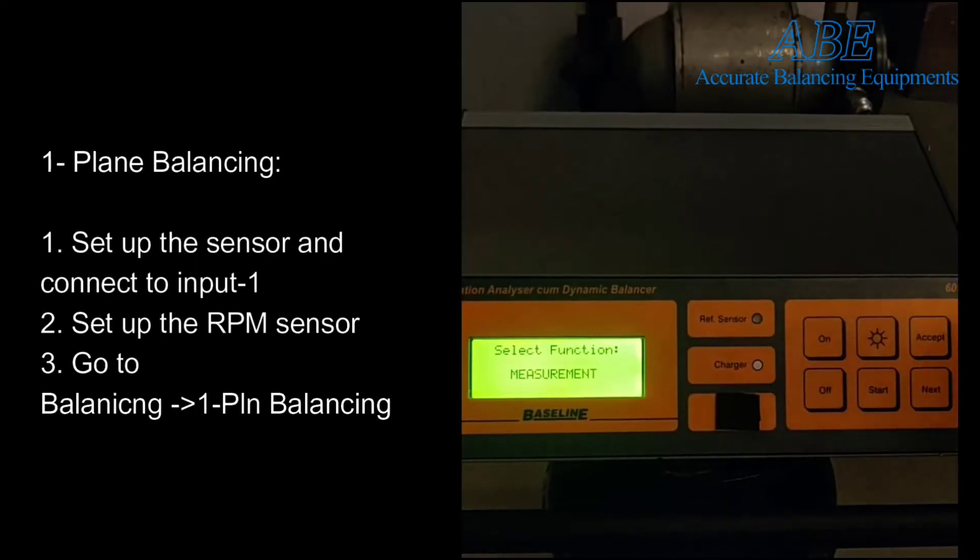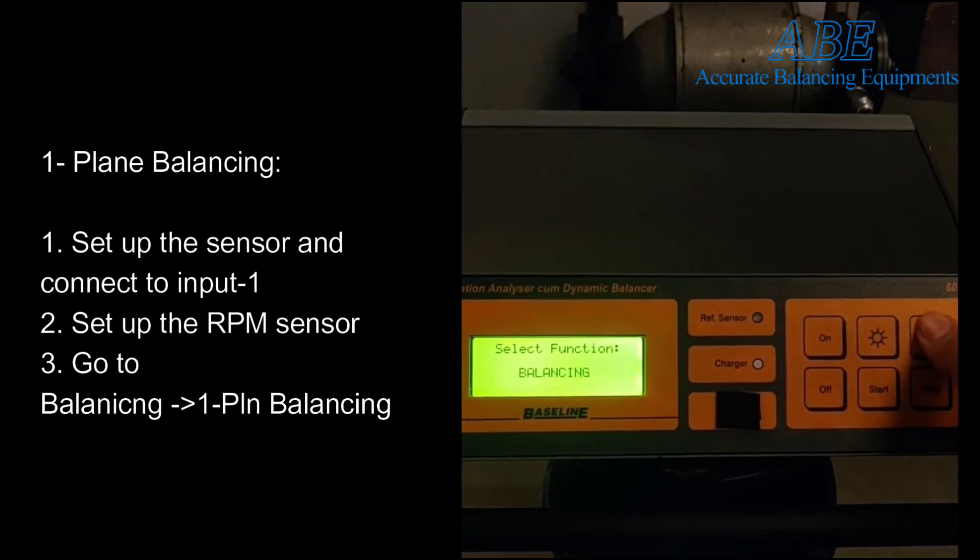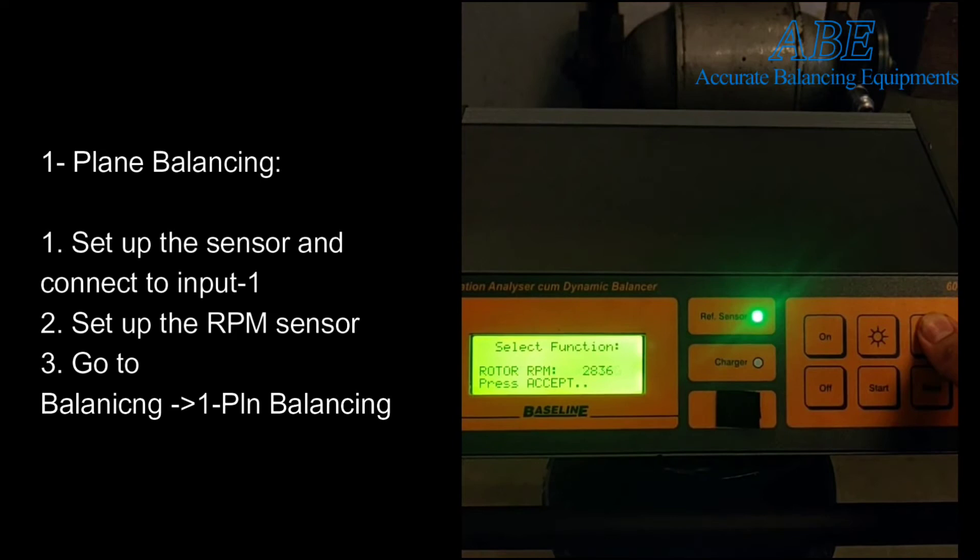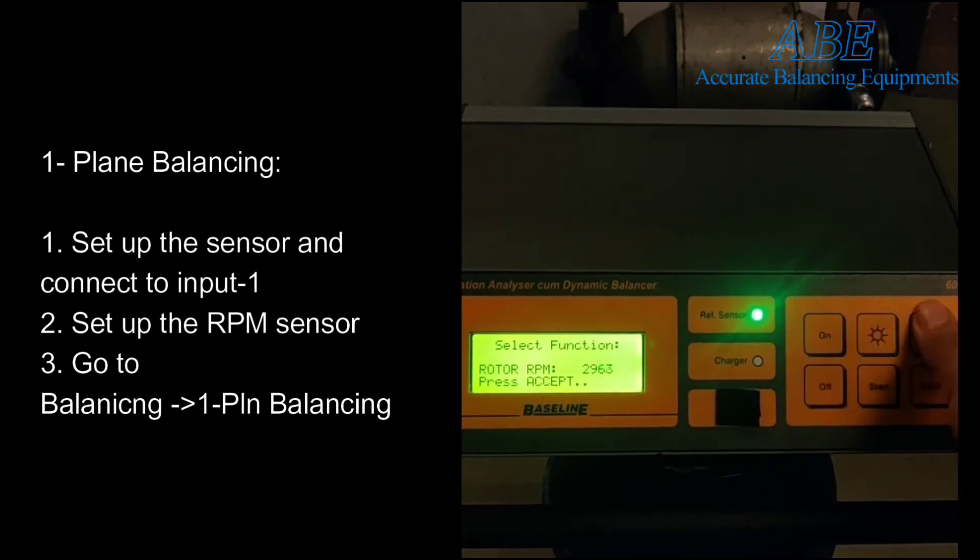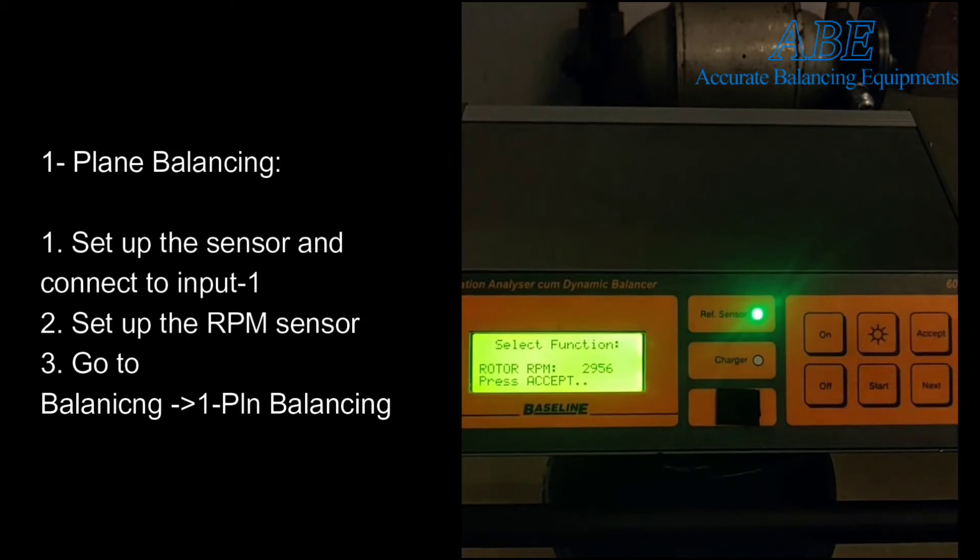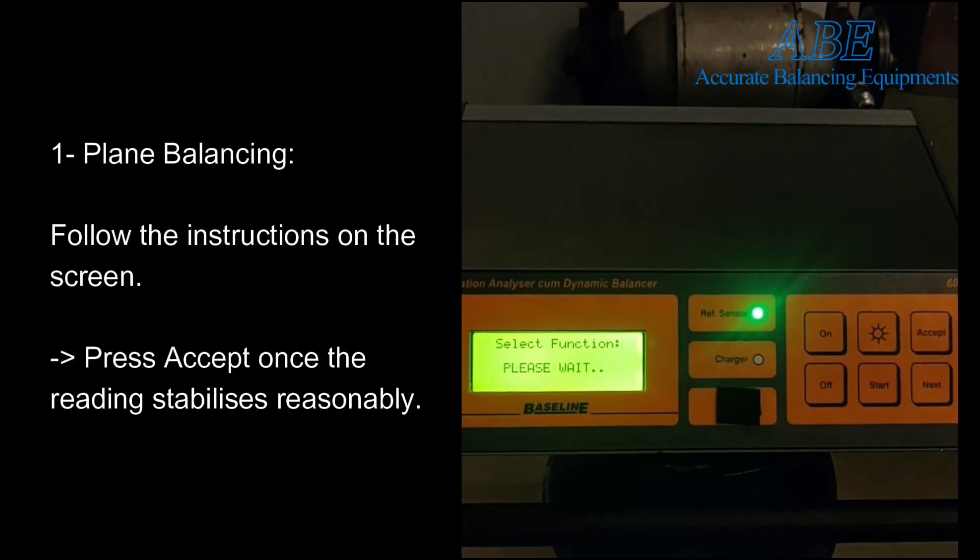Here is a demo of single-plane balancing using the 6050. Set up the unit for balancing as per requirement from the balancing setup. Set up the sensor and connect to channel one and suitably mount it on the rotor. Connect the RPM sensor for phase reference. Go to balancing, then one-plane balancing, then follow the instructions on the screen.